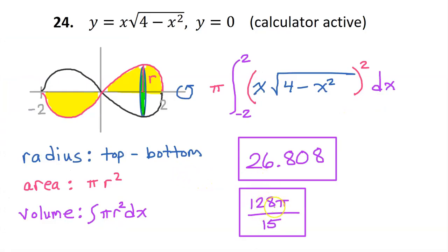The volume is 26.808. If we had integrated by hand, we would have gotten 128 pi over 15.